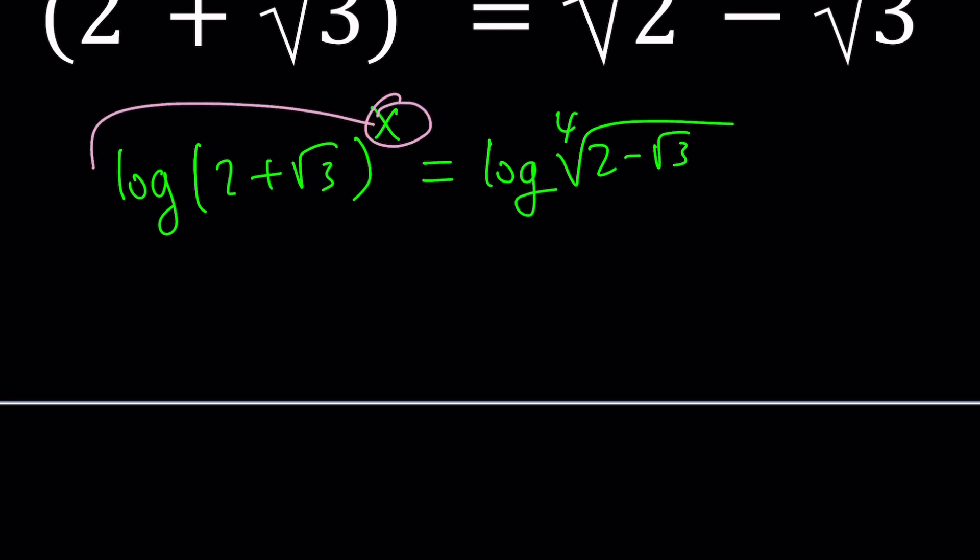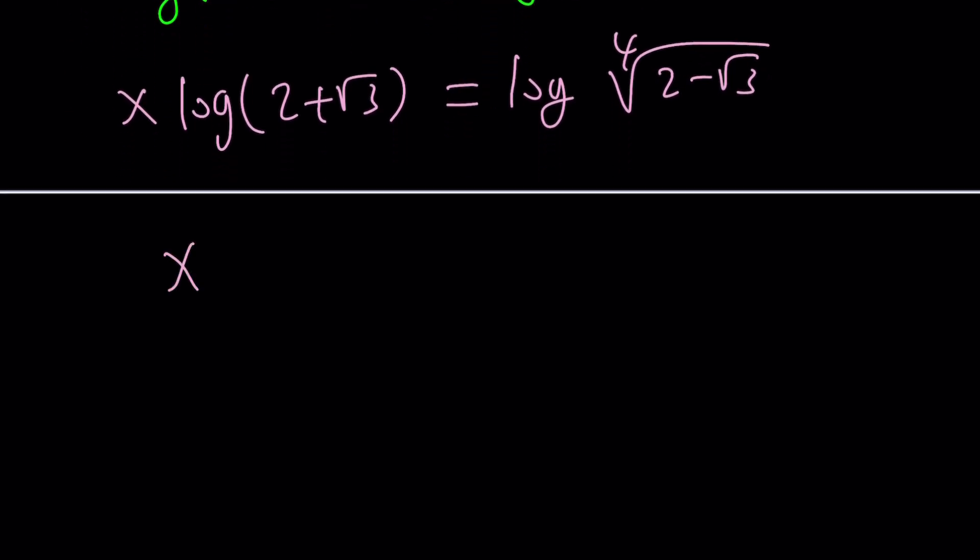So now, we use properties of exponents or properties of logs, which are the same thing pretty much. You bring the x down, that gives you x times log(2 plus root 3) equals log the fourth root of (2 minus root 3). By the way, if you want to write this as something to the power of one-fourth, you can do that and bring the one-fourth to the front. Let's say you're using a calculator. If you're using a calculator, then you will get the answer right away, because the calculator will tell you what it is from here.